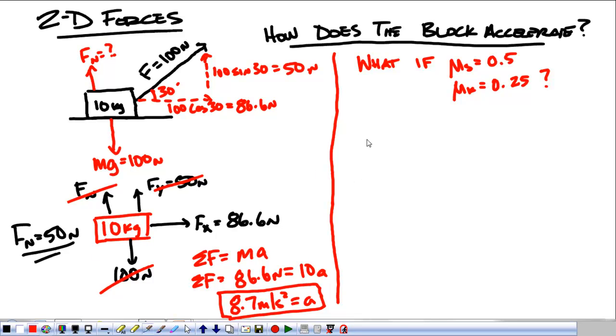So, looking at our mass again, we have 86.6 pulling this way, weight is pulling down with 100, force in the y is 50, and our normal force is now 50. It's not equal to the weight, because the block is not pressing up against the surface so much. And we have friction pulling back.